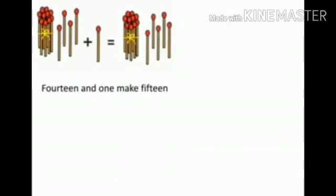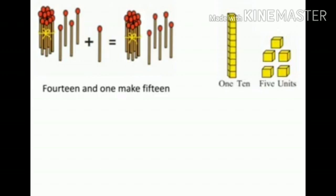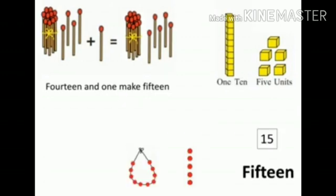Here, 1 bunch of math sticks is there — that is, 10 math sticks. With 4 math sticks, 14 plus 1 math stick equals 15 math sticks. 14 and 1 make 15. The 10-group of blocks is 1 ten and 5 blocks is 5 units. 10 bits of the string is 1 ten and 5 bits is 5 units. That is, 15, and the spelling of 15 is F-I-F-T-E-E-N.